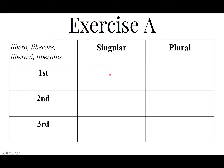For the pluperfect: third principal part, chop off the I — liberav — and then add the endings. Liberaveram, liberaveras, liberaverat, liberaveramus, liberaveratis, liberaverant. And these verbs are getting fun! And then the future perfect of liberavi: go to the third principal part, chop off the I, get the perfect stem liberav, and then add the appropriate endings. Liberavero, liberaveris, liberaverit, liberaverimus, liberaveritis, liberaverint.